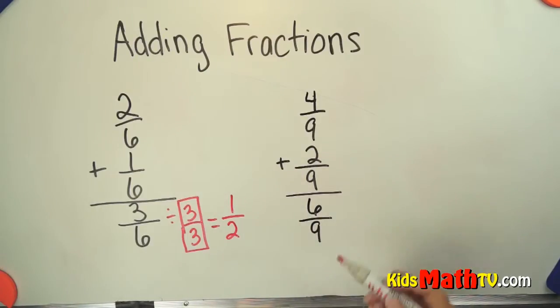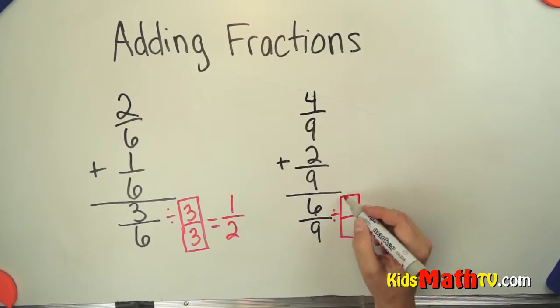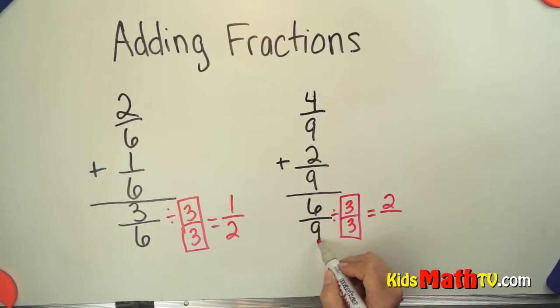So now let's see, is there a number that will divide both 6 and 9? Can I simplify 6 ninths to something else? I know that 3 will divide both 6 and 9. So I'm going to divide by 1, and my 1 is going to be 3 over 3. 6 divided by 3 is 2, and 9 divided by 3 is 3.